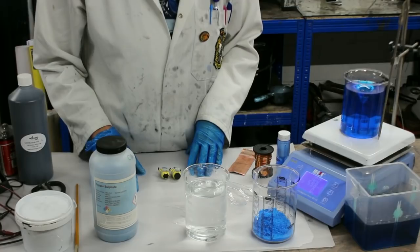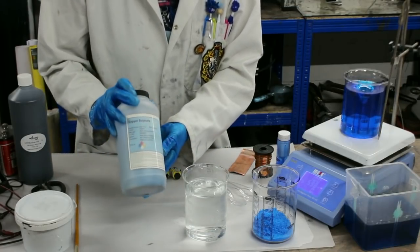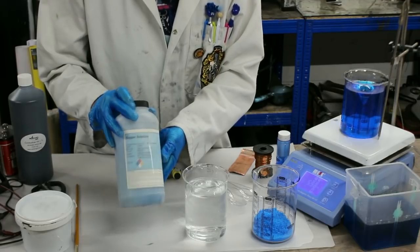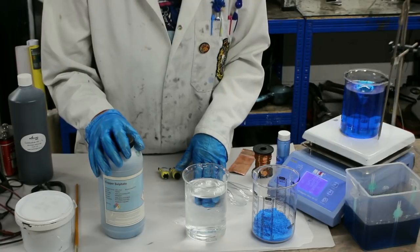First I'm going to run through some of the items that we're going to need. Now I'm using copper sulfate which is easily available on eBay but you could use copper formate or copper acetate which also has copper ions in it.